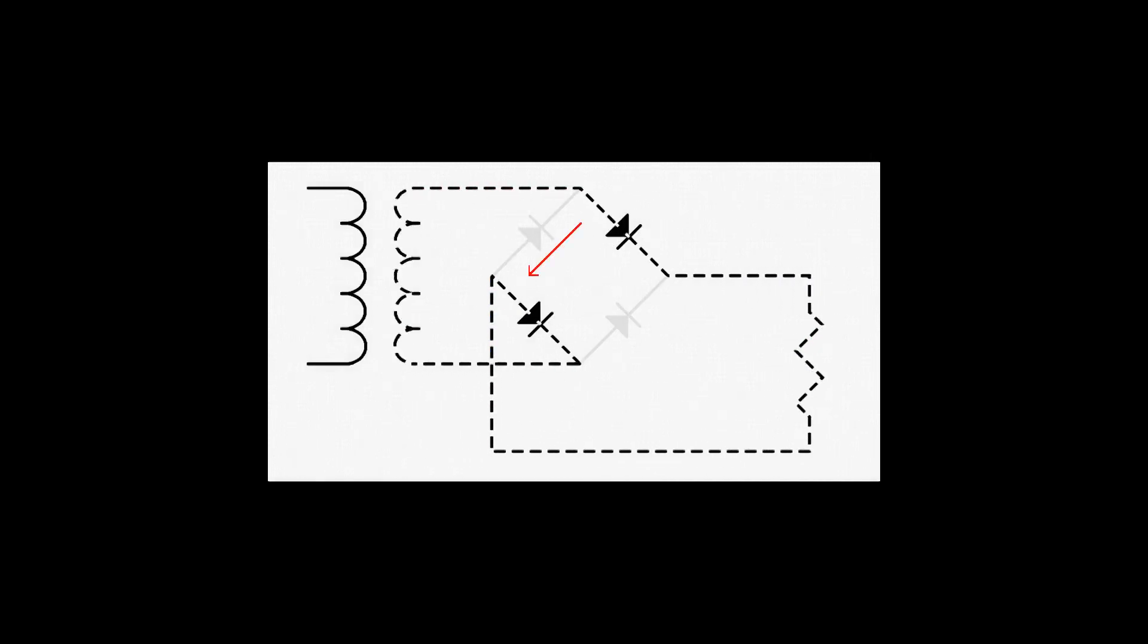Current does not flow through this diode because current will not flow through a diode in this direction. It doesn't flow through this diode for the same reason.